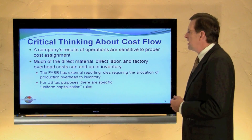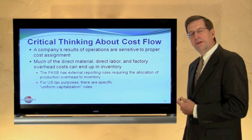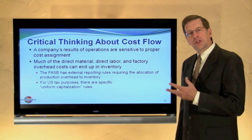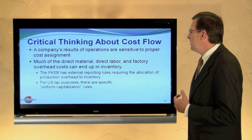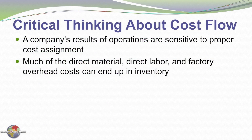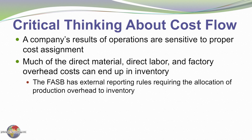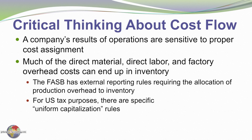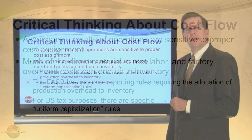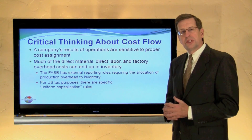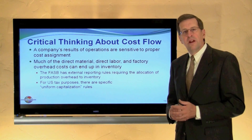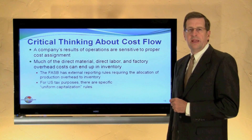A company's results of operations are very sensitive to proper cost assignment. If we don't allocate costs appropriately to manufacturing or non-manufacturing, or to raw materials, work in process, or finished goods, we can have significantly erroneous financial statements. The Financial Accounting Standards Board has addressed this with reporting rules requiring the allocation of overhead to inventory. For U.S. tax purposes, there are also specific uniform capitalization rules specifying how much cost must be allocated to inventory rather than expensed in a given period. In subsequent chapters, we'll look at analysis techniques that separate costs into fixed and variable components for better internal decision-making insight.